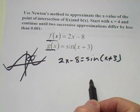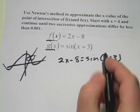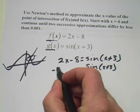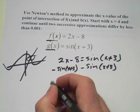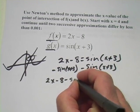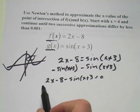But to use Newton's method, we want one function all on one side of the equal sign here. So I'm going to subtract sin(x + 3) from both sides. And what I get is 2x - 8 - sin(x + 3) = 0. And this is the function we're going to use in Newton's method.